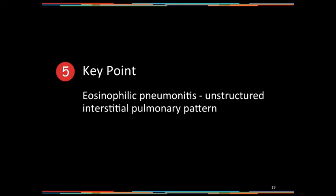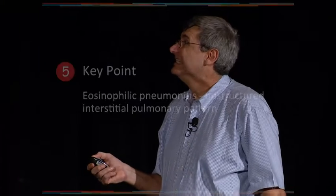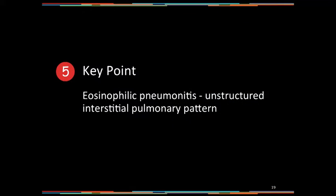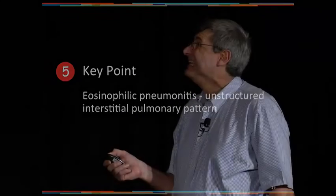The key point is that when you get heartworm disease, you can have an allergic reaction that will result in a bronchial pattern and an unstructured interstitial pattern, and it's purely due to the eosinophils. These eosinophils can set up an eosinophilic pneumonitis — again, that's the unstructured interstitial pulmonary pattern.